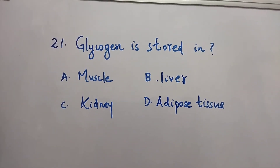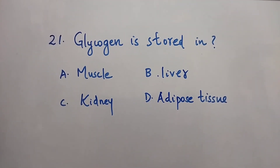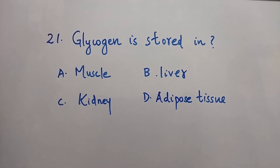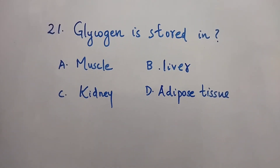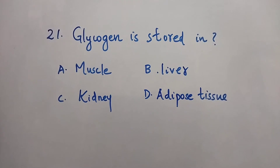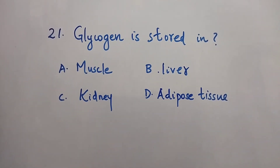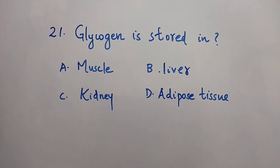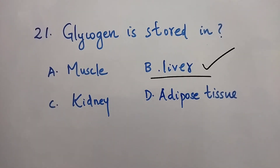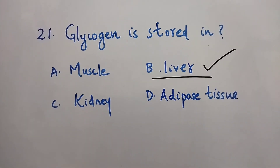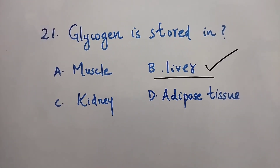Question number 21: Glycogen is stored in — Option A: Muscle. Option B: Liver. Option C: Kidney. Option D: Adipose tissue. The right answer is Option B, Liver. Glycogen is stored in the liver.